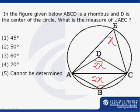Now, ABCE is a cyclic quadrilateral, and in a cyclic quadrilateral, the sum of two opposite angles is always equal to 180 degrees. So, x plus 2x must be equal to 180 degrees.